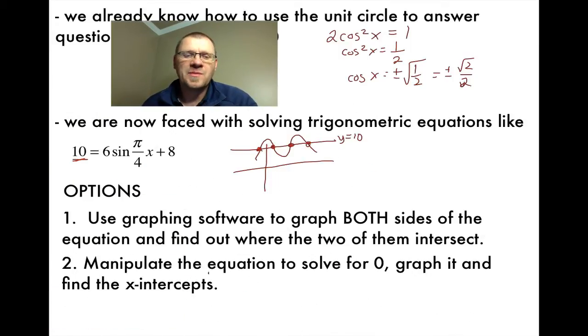If we're talking about this graph, we have a line which is y = 10, that's this part of the equation right here. And then we could graph this sine function as well by using a program like Geogebra, and it would look something like this. And then you can just find out your points of intersection. Our second option, we can manipulate the equation to solve for zero, graph it, and then find the x-intercepts.